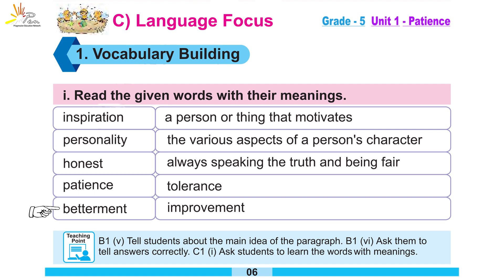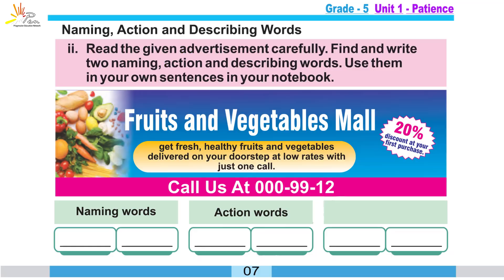Betterment کا مطلب ہے improvement — یعنی اپنی بہتری چاہنا۔ Improvement کا مطلب ہے کہ آگے سے آگے بہتر کے لیے کوشش کرنا۔ اس کے بعد ہم دیکھیں گے page number 7 پر: naming, action and describing words۔